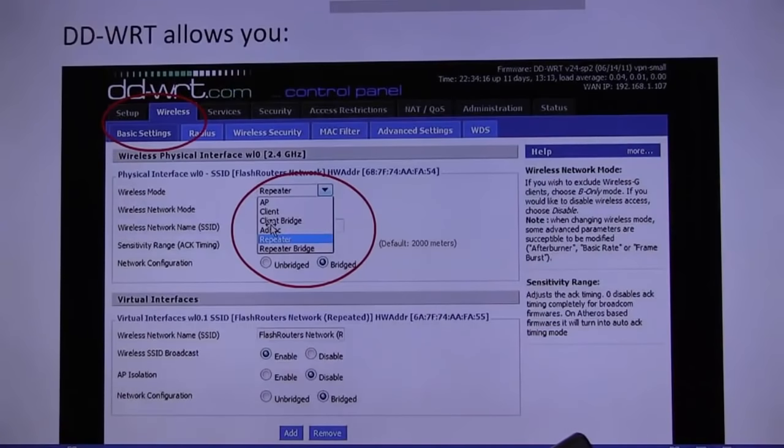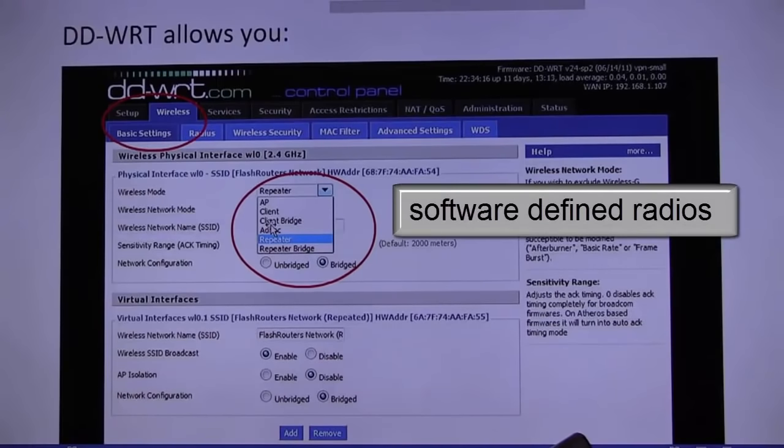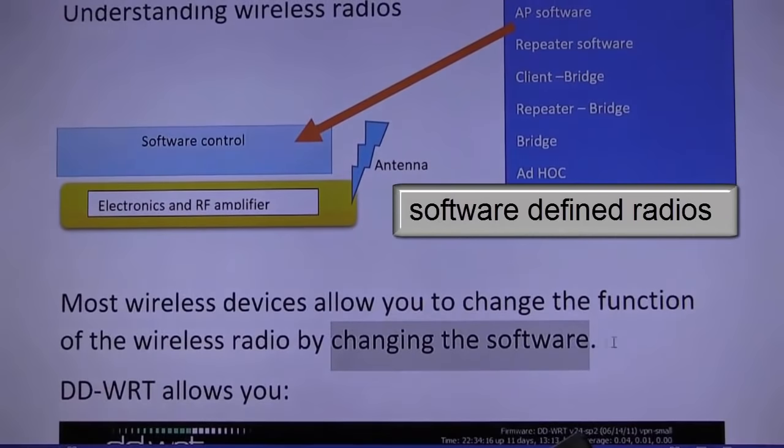So I can take my router and say quit acting like an access point. I want you to act just like my laptop. And now my access point is looking for another access point. You can also do client bridge, ad hoc, repeater, and repeater bridge. I can take any access point and totally change what it does by just changing the software.